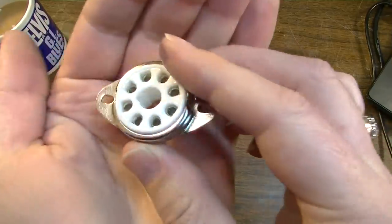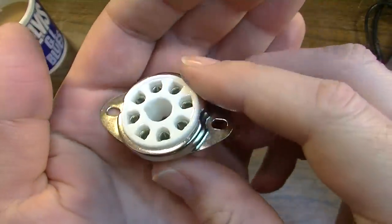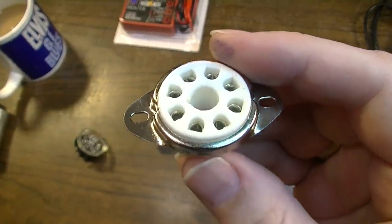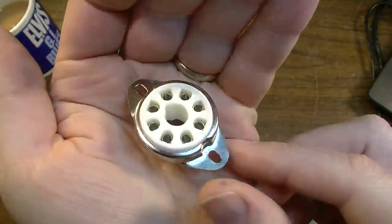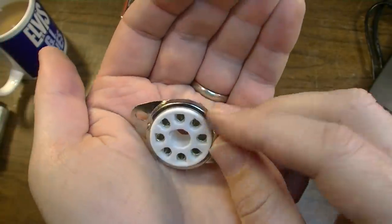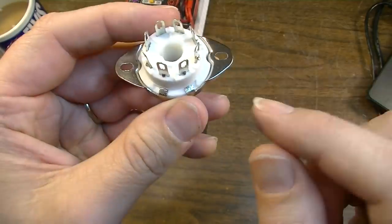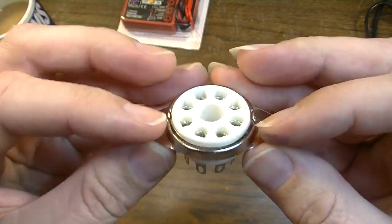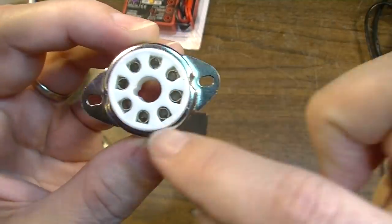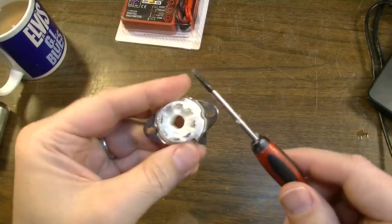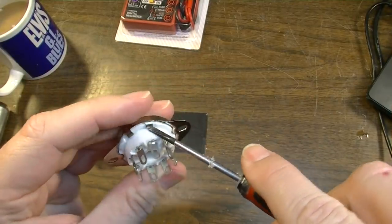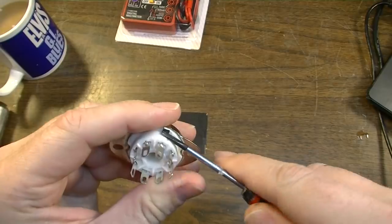First things first, these tube sockets, you can get these at parts suppliers, such as Antique Electronic Supply. That's the parts supplier that I usually use. But the first thing we're going to have to do is remove this outer mounting ring right here, this bracket. So we'll just take a small screwdriver or some other implement so that we can pry these tabs up.